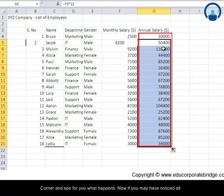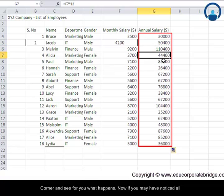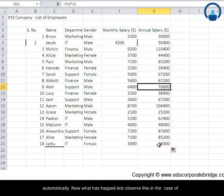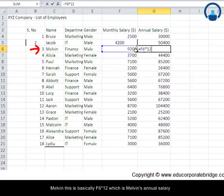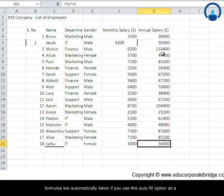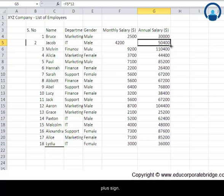Now if you may notice all the other cells which are immediately below Jacob gets filled automatically. Now what has happened? Let's observe in the case of Melvin. This is basically F6 multiplied by 12 which is Melvin's annual salary. Likewise let's check for Alice. This is F20 multiplied by 12. So we note that these formulas are automatically taken if you use this autofill option as a plus sign.